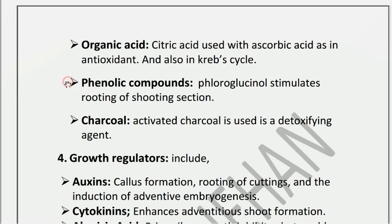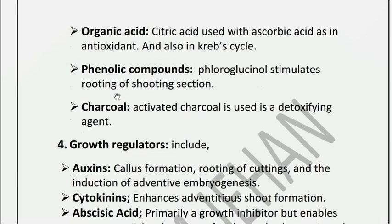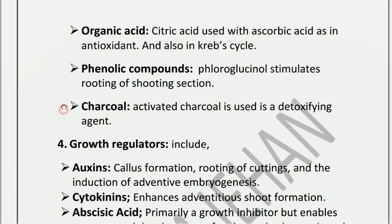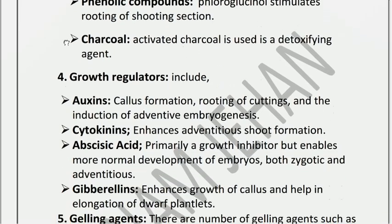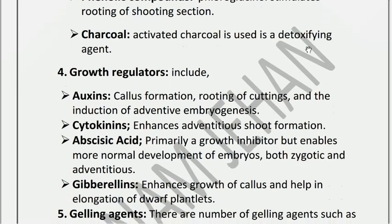Phenolic compounds such as phloroglucinol are used for stimulating shooting and rooting. Rooting stimulation is an important function. Charcoal is used as a detoxifying agent — when the plant produces toxins in the medium, charcoal is used to detoxify them.